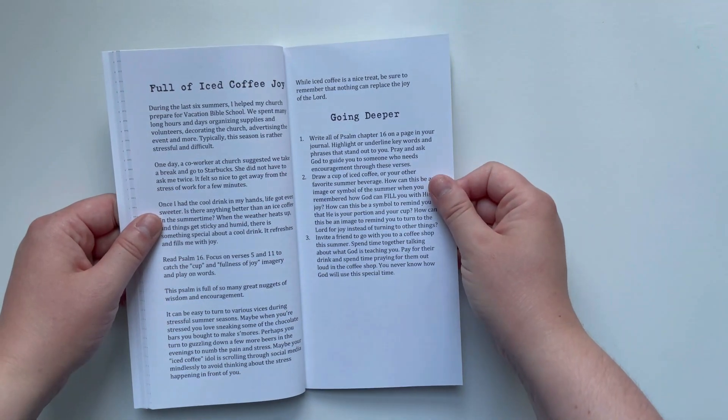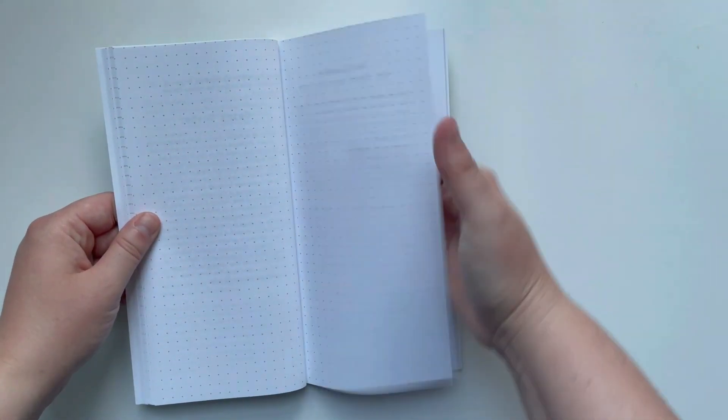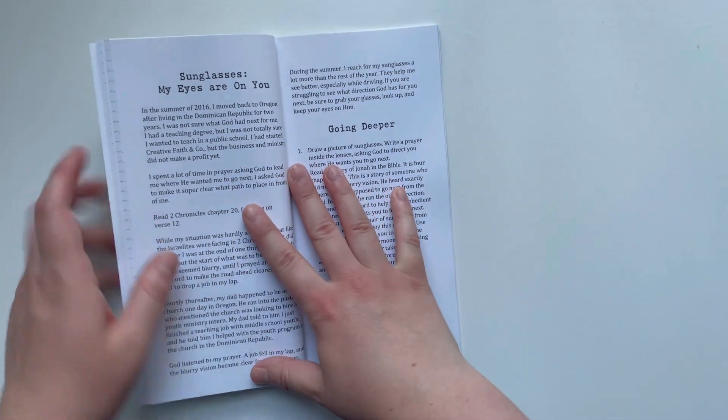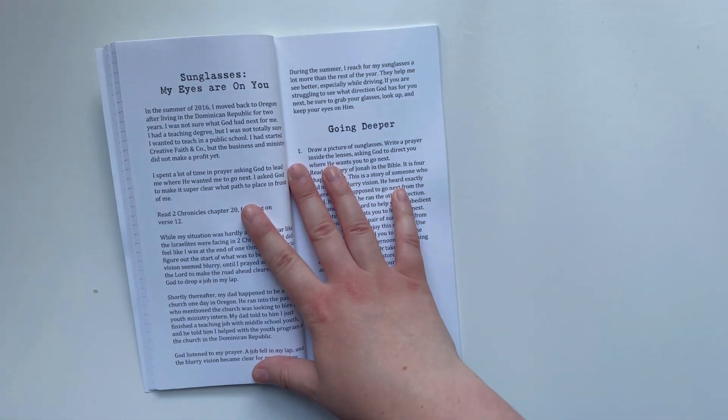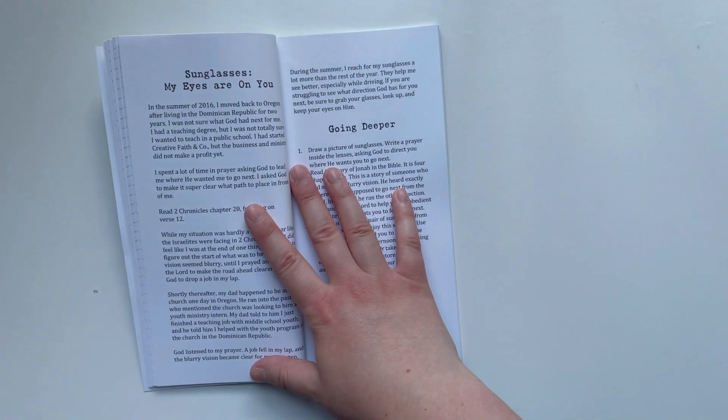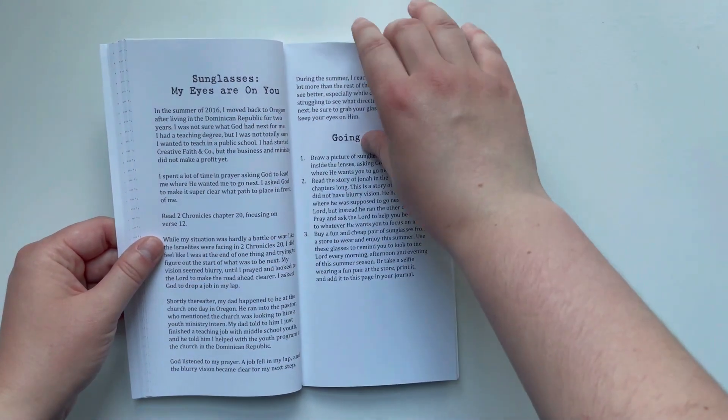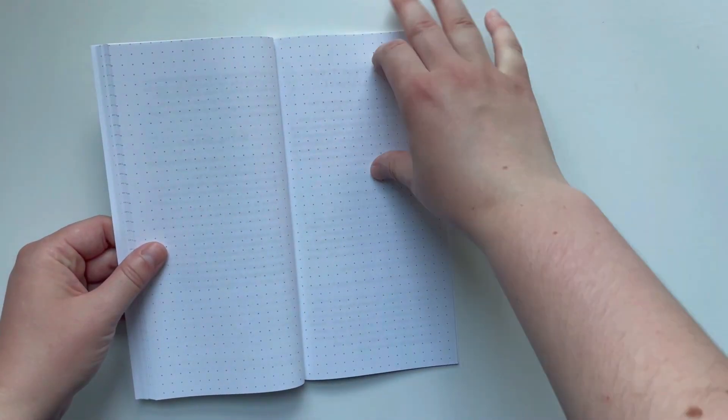Next we have Sunglasses: My Eyes Are On You. The coordinating printable has some very cute sunglass imagery, and that is really important as we read through the book of Second Chronicles.